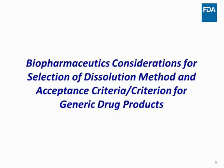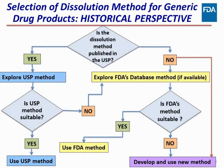Let's move to our current standing — how, at the Division of Biopharmaceutics, we look into selection of dissolution method and what you can do. This is a historical perspective slide I've used a couple of times. Historically, the first step is go to USP: if there's a monograph containing a USP dissolution method, pick up that method. If it's suitable for your product, use it. If there's no monograph, use an FDA-recommended method if suitable. If neither exists, you are always free to develop your own method and justify it. That's how we did business five or six years back.